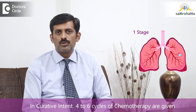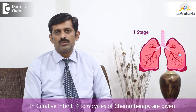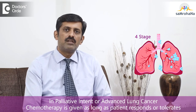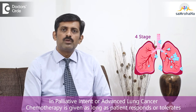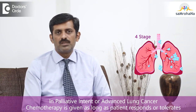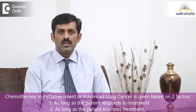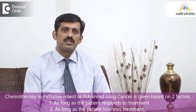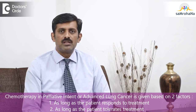So it is basically individualized. Generally in curative intent, we will give 4 to 6 cycles of chemotherapy. Whereas in palliative or advanced lung cancer, we may have to give chemotherapy for as long as the patient responds or tolerates the chemotherapy. The number of cycles will basically depend on these two factors when treating a patient with lung cancer.